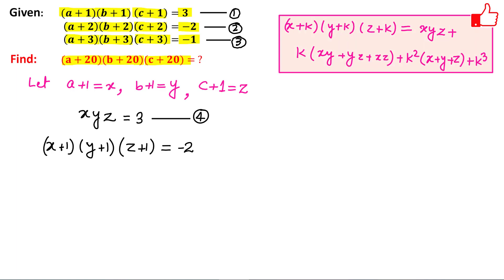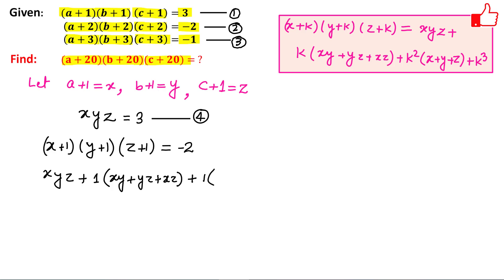Here k is a constant. For equation 2, k equals 1. So expanding (x+1)(y+1)(z+1): the first term is xyz, then 1 times (xy + yz + xz), then 1 squared times (x + y + z), plus 1 cubed. This equals -2.